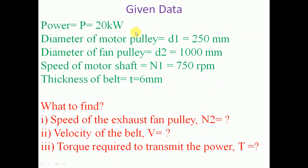The given data: Power P = 20 kilowatt. Diameter of motor pulley d1 = 250 mm. Diameter of fan pulley d2 = 1000 mm. Speed of motor shaft n1 = 750 rpm. Thickness of belt t = 6 mm. Required to find: speed of exhaust fan pulley n2, velocity of the belt v, and torque required to transmit the power T.